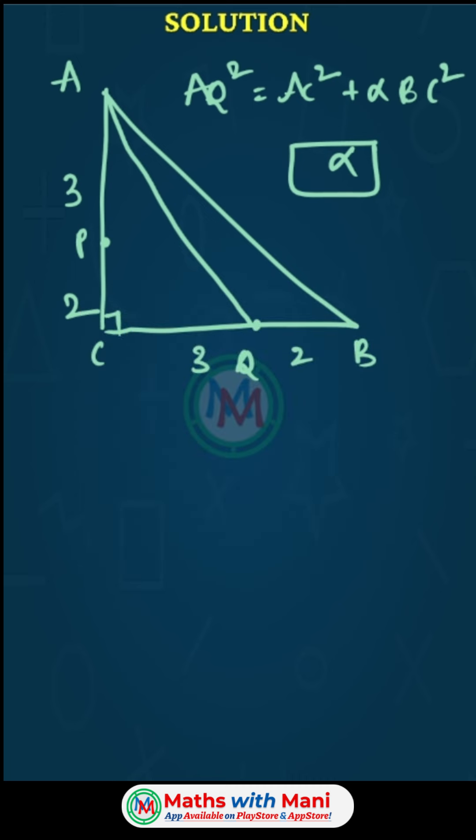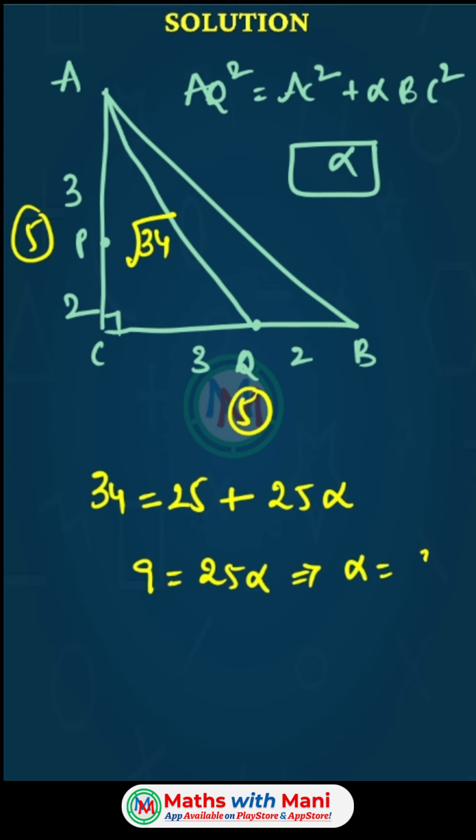As usual, AQ is 5 parts here and 5 parts here. So AQ = √(5² + 3²) = √(25 + 9) = √34. Now 34 = AC² = 25 + α(25). So 34 - 25 = 25α, giving 9 = 25α. Therefore α = 9/25.